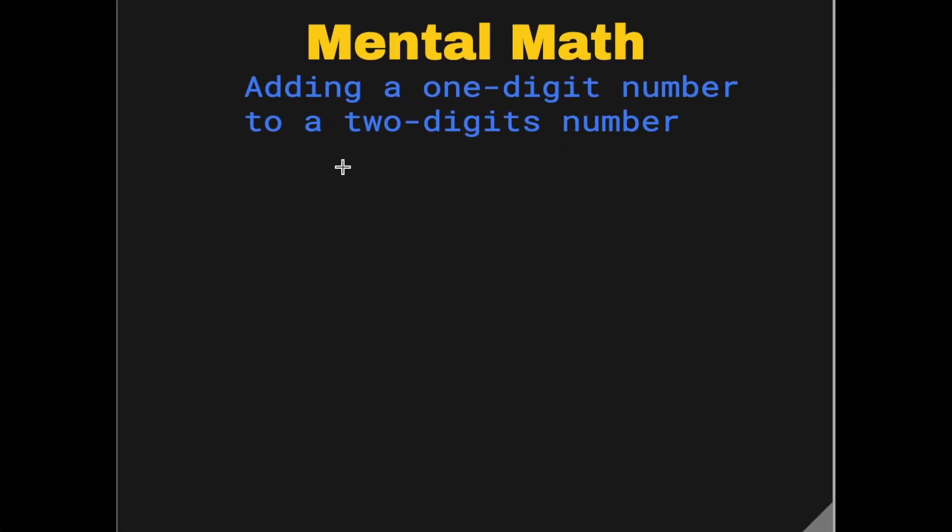So I have a question: 63 plus 4. So how to answer this question in your brain?